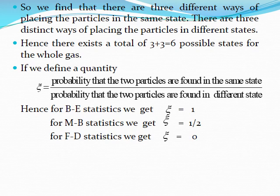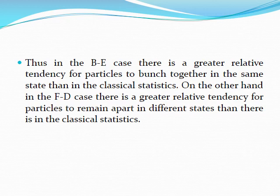If we define a quantity xi as the probability that two particles are found in the same state divided by the probability that they are found in different states, then in BE statistics xi equals 1, for MB statistics it is 1/2, and for FD statistics it is 0. Thus, in the BE case there is a greater relative tendency for particles to bunch together in the same state than in classical statistics. On the other hand, in the FD case, there is a greater relative tendency for particles to remain apart in different states.